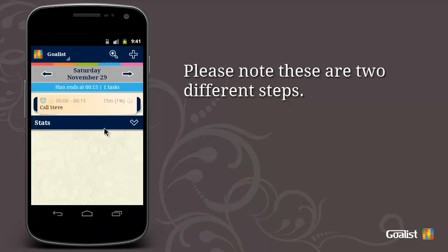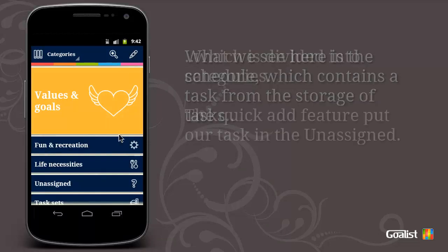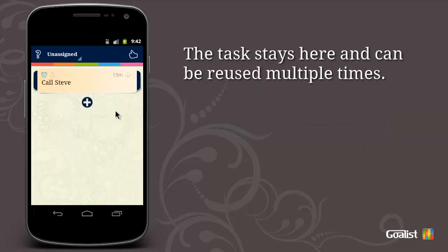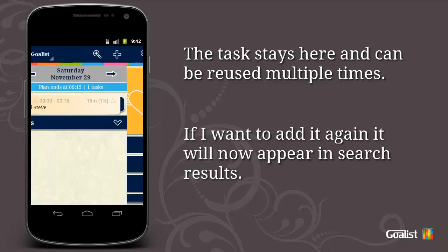Please note these are two different steps. What we see here is the schedule, which contains a task from the storage of tasks, which is divided into categories. The quick add feature put our task in the unassigned category. The task stays here and can be reused multiple times. If I want to add it again, it will now appear in search results.